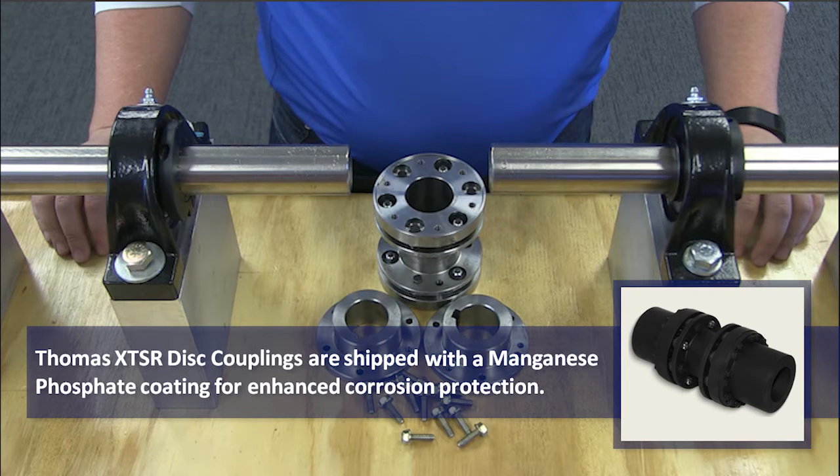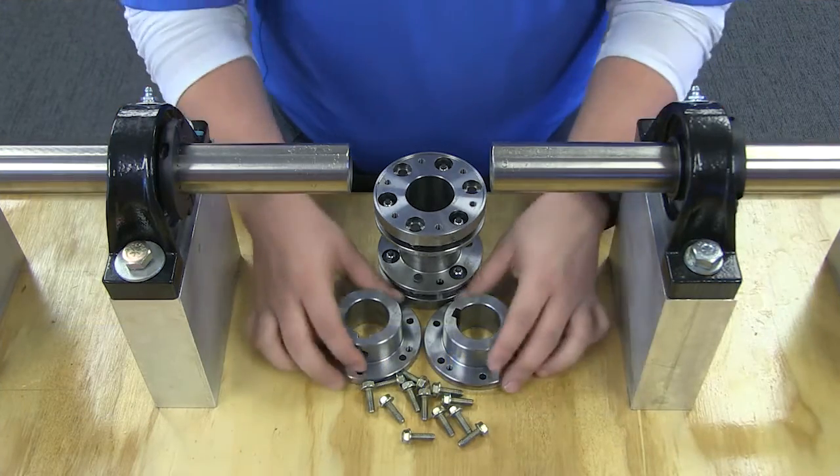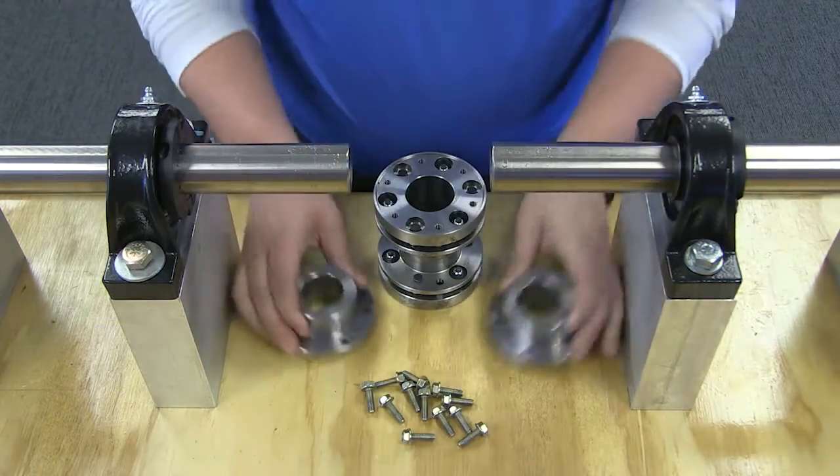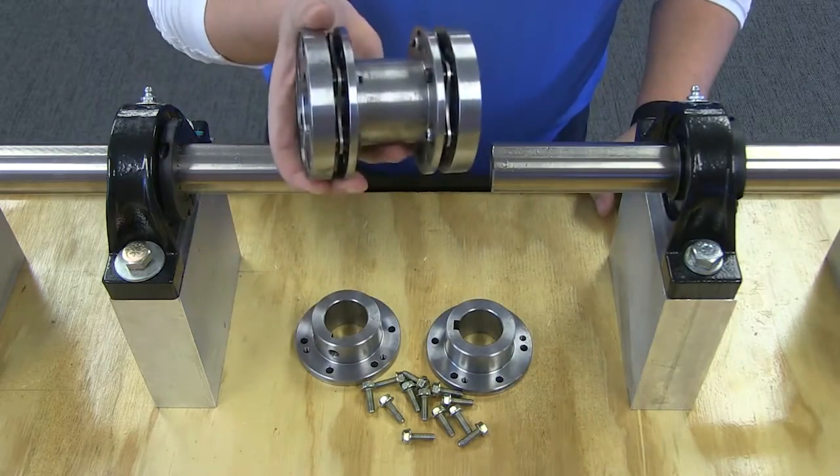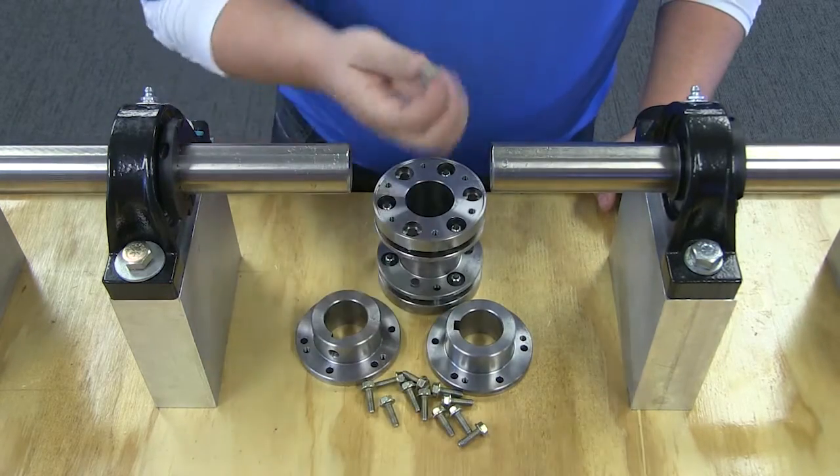Due to the Thomas Disc Coupling's simple design, there are just a few components in the box: the two hubs, the center member sub-assembly, and the necessary hardware.